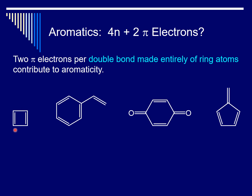Let's start first with cyclobutadiene. The ring is completely conjugated — the bonds alternate double, single, double, single around the entire perimeter of the ring. Two double bonds: 2 times 2 is 4. Four pi electrons.